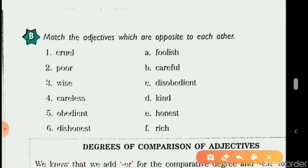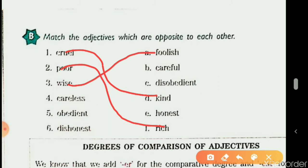The antonym pairs are as follows: First, cruel — kind. Second, poor — rich. Third, wise — foolish. Fourth, careless — careful. Fifth, obedient — disobedient. Sixth, dishonest — honest.